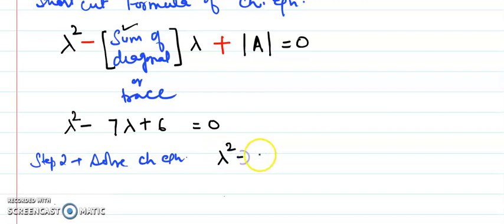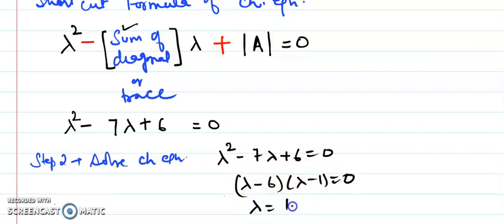But here I have directly written the equation and next step is solve this characteristic equation. We are going to solve this lambda square minus 7 lambda plus 6 equals to 0. What are the two numbers, so sum is 7 and product is 6. So I will get lambda minus 6 and lambda minus 1 is satisfying, so I get the lambda value is 1 and 6.